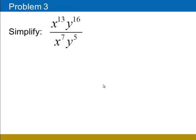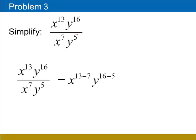The rule at play here is the quotient rule. When we have the same base in the numerator and denominator, we take the exponent in the numerator and subtract from it the exponent in the denominator. So for the variable x, we'll subtract 13 minus 7, while for the variable y, we'll subtract the exponents 16 minus 5. 13 minus 7 is 6, and 16 minus 5 is 11, so we have x to the 6th, y to the 11th power.